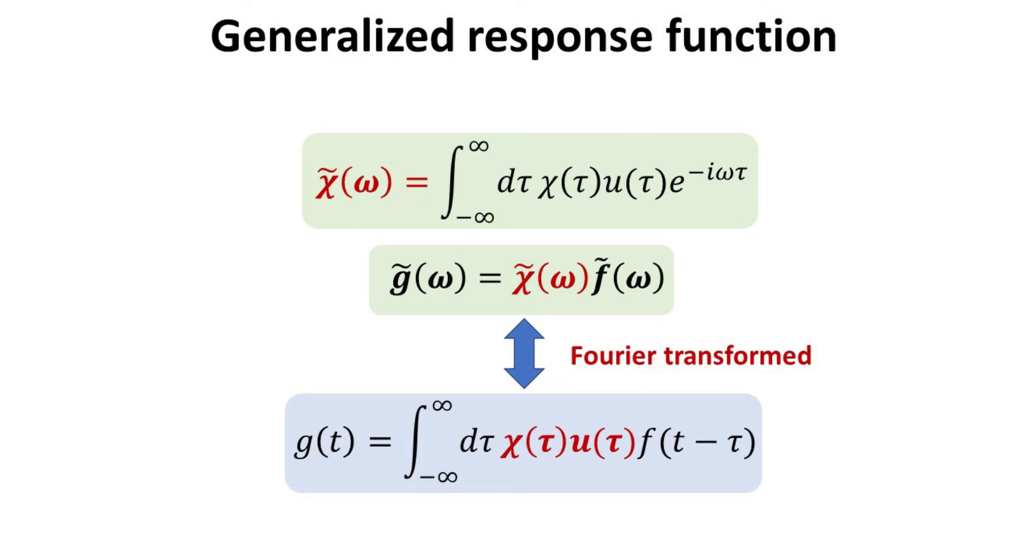Here, G tilde omega and F tilde omega are the Fourier transform of Gt and Ft, while chi tilde omega is known as the generalized response function, given by the Fourier transform of the impulse response function as shown.